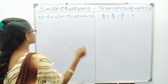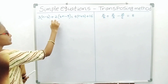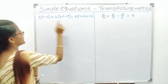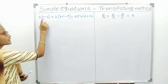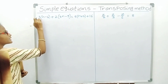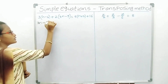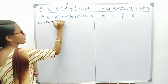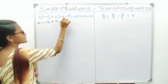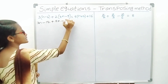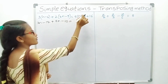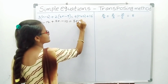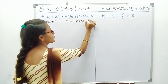Okay, we will solve some more problems. See the problem: 3 of (n minus 4) plus 2 of (4n minus 5) is equal to 5 of (n plus 2) plus 16. Here 3 of (n minus 4): 3 into n is 3n, minus 3 into 4 is 12. Plus 2 of (4n minus 5): 2 into 4n is 8n, minus 2 into 5 is 10. Is equal to 5 of (n plus 2) plus 16.